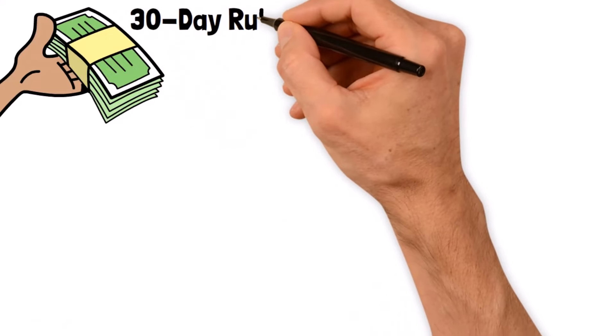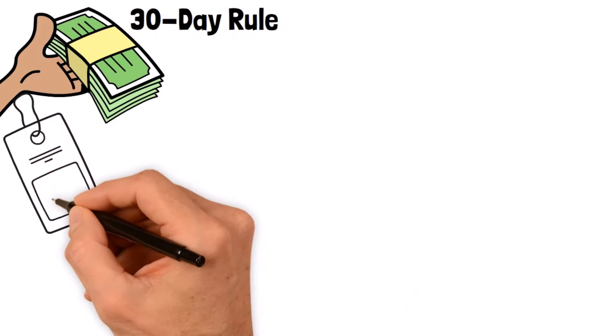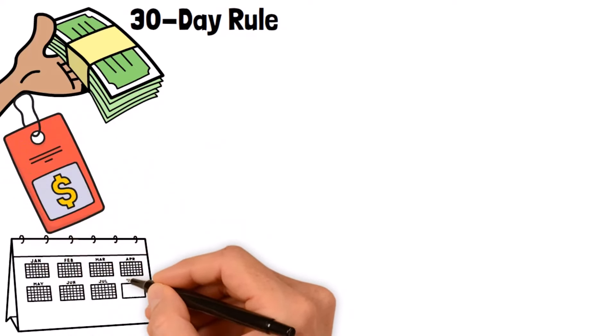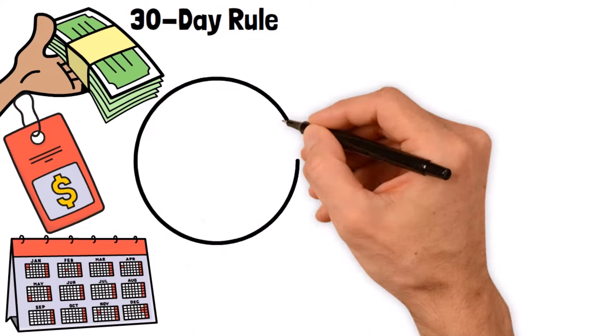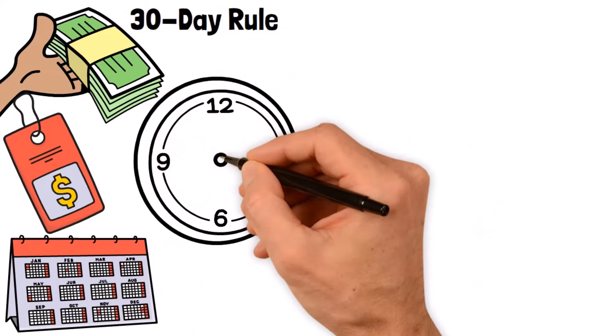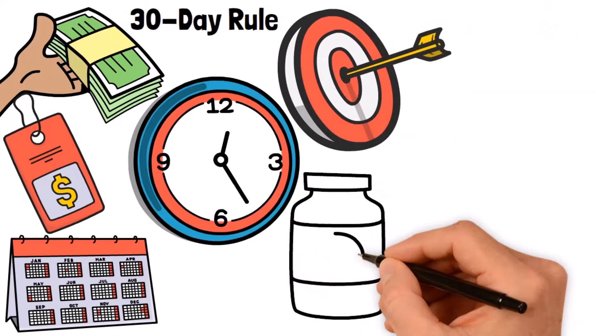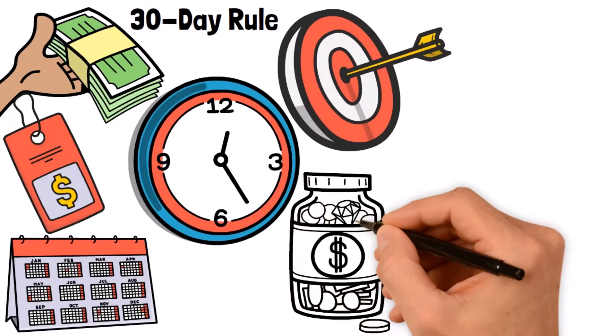To cultivate contentment and curb impulse spending, try implementing a 30-day rule. Whenever you feel the urge to buy something non-essential, wait for 30 days before making the purchase. During this time, reflect on whether the item aligns with your long-term goals and if it's essential. You'll be surprised how often your desire for that item disappears, saving you money.